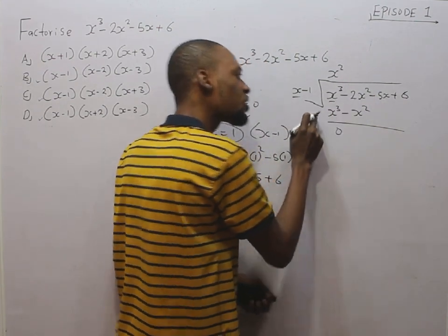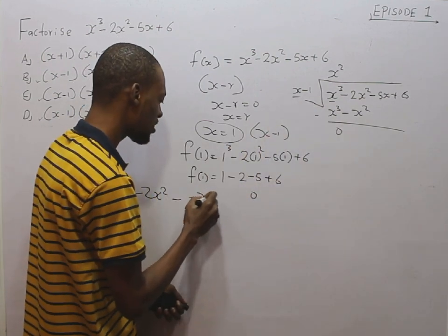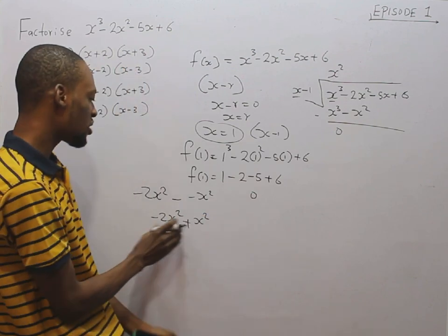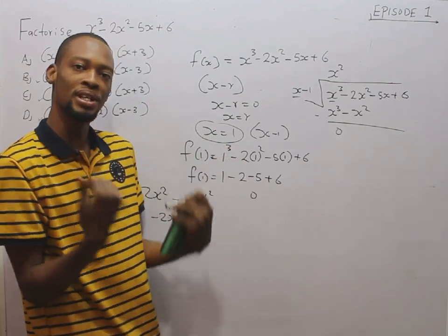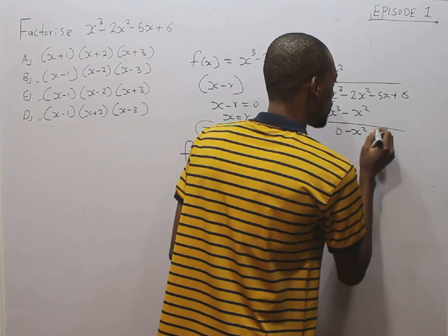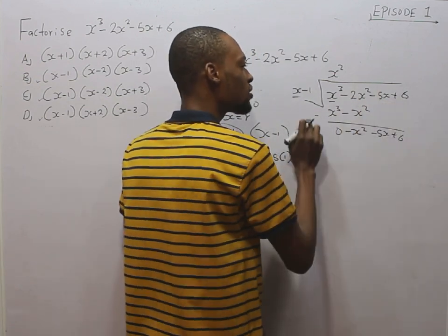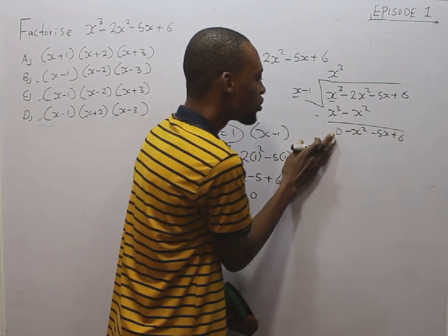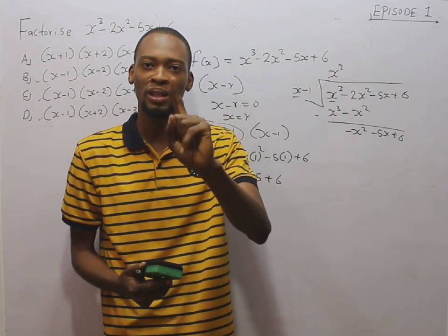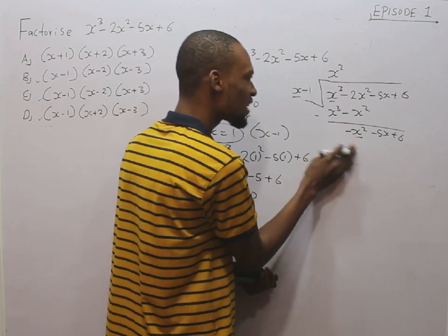After subtracting: s cubed minus s cubed is 0. Then minus 2s squared minus minus s squared — that is minus 2s squared plus s squared — gives minus s squared. The remainder so far is minus s squared minus 5s plus 6. You can remove the 0 since it means nothing. If you understand up to this point, be happy because you now understand everything about long division. The next steps are repetition of these same steps.